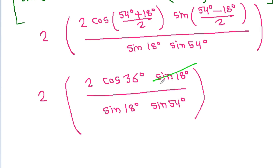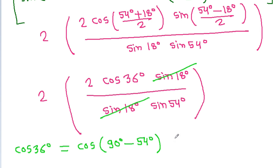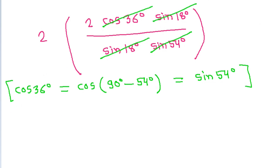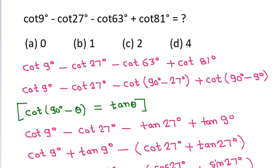Now sin 18° cancels. Also, cos 36° = cos(90° - 54°) = sin 54°, so sin 54° cancels too. We are left with 4, so the correct option is option D.